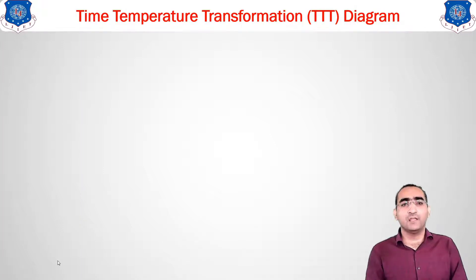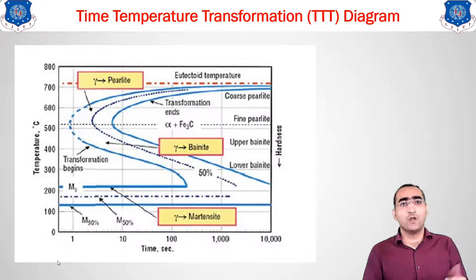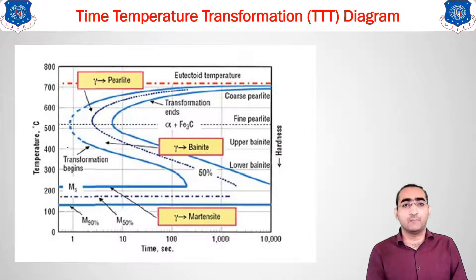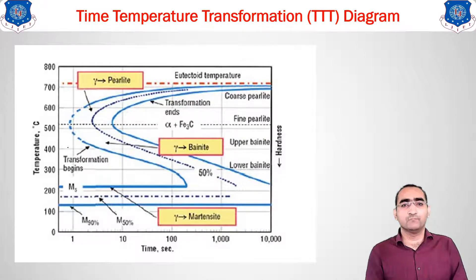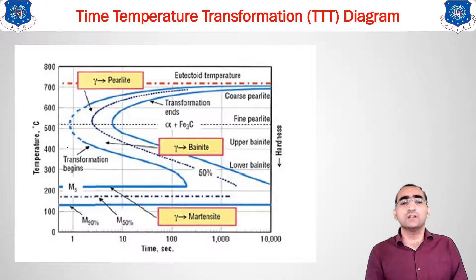Let us recall what the TTT diagram is. It is the time-temperature transformation diagram. There are three microstructural ranges it captures: pearlitic, bainitic, and martensitic. The iron-carbon diagram was unable to show the martensitic and bainitic regions, but the TTT diagram shows all three regions, and it shows how transformation occurs as temperature changes — that relationship is what the TTT diagram represents.